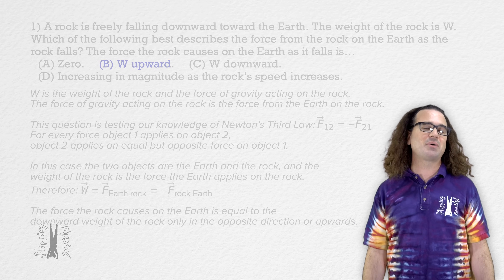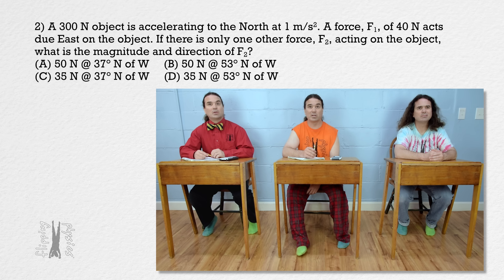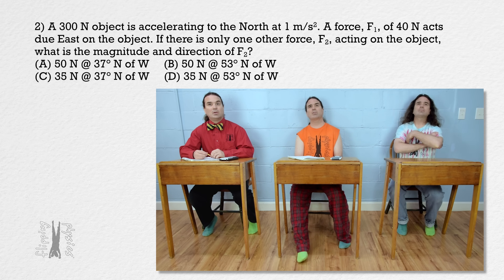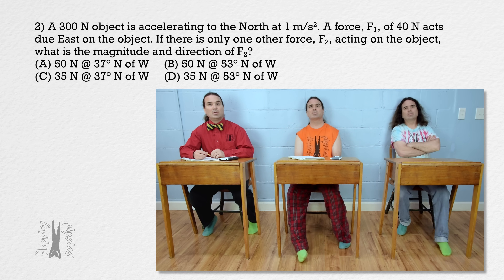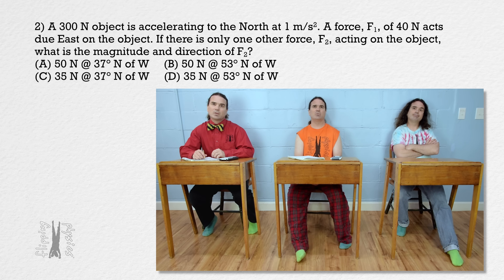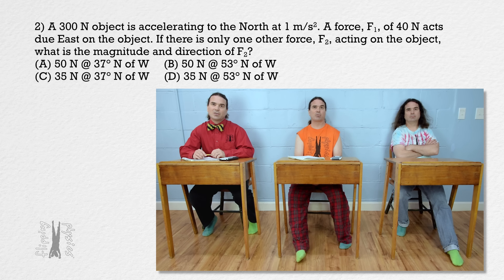Bobby, please read question two. A 300 newton object is accelerating to the north at one meter per second squared. A force, force one, of 40 newtons acts due east on the object. If there is only one other force, force two, acting on the object, what is the magnitude and direction of force two?